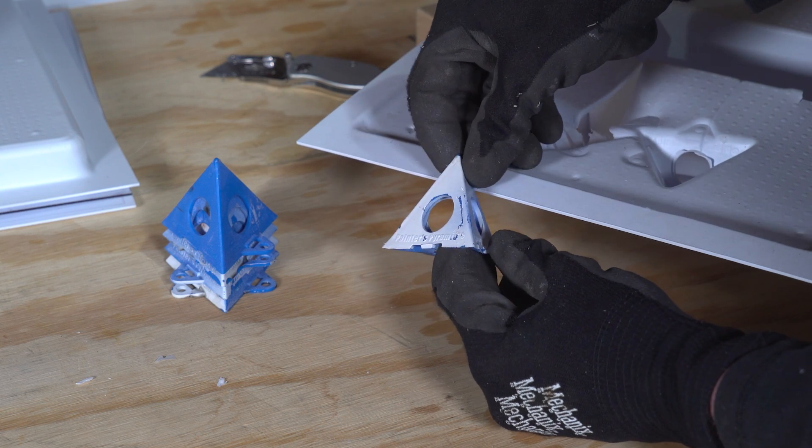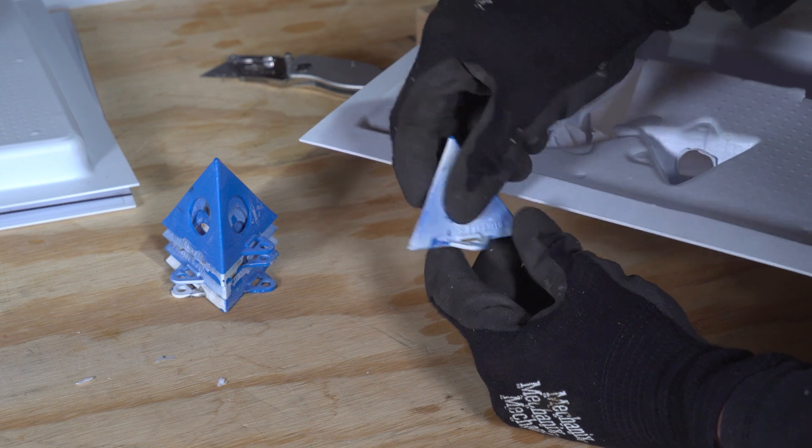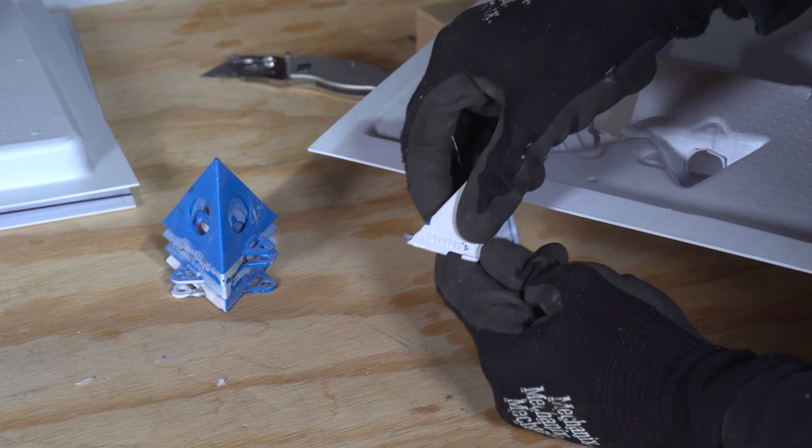At the bottom of the pyramids, you can see some deformation generated by the process. To counteract this, I will need to make the walls of the 3D printed part fairly thick.